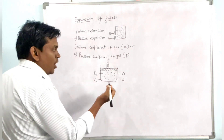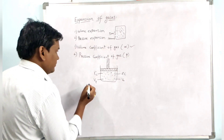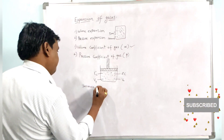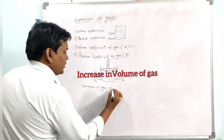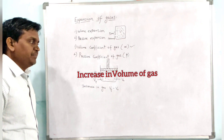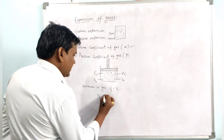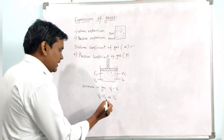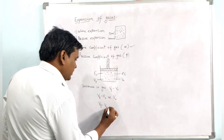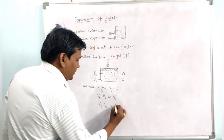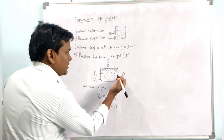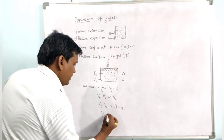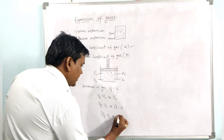Since the piston is movable, the volume increases. The increase in volume is Vt minus V₀. This increase is directly proportional to V₀ (the initial volume) and also directly proportional to the change in temperature, T minus zero, which is T. Combining both, Vt minus V₀ is directly proportional to V₀·T.